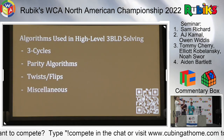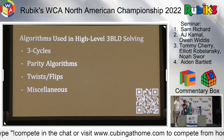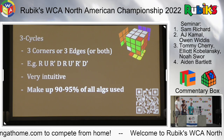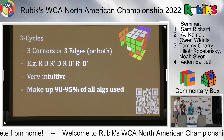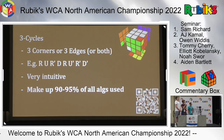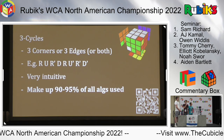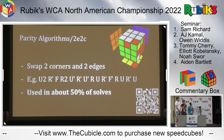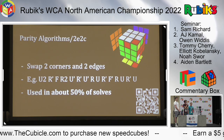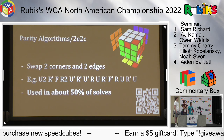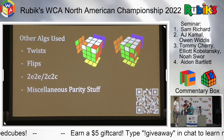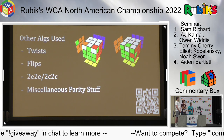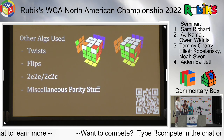There are quite a few algorithms we use in high-level 3-blind solving. Starting with three cycles, these cycle either three corners or three edges, or both using a technique called block comms - we won't cover that today. Though it may seem like a lot of algorithms to learn every three cycle from a single buffer, they're all very intuitive and you can figure them out on any cube. Parity algorithms swap two corners and two edges, coming up in about every other solve. We also use twists and flips, and 2e2e and 2c2c - for example, a Z-perm on a 3x3 is a 2e2e.